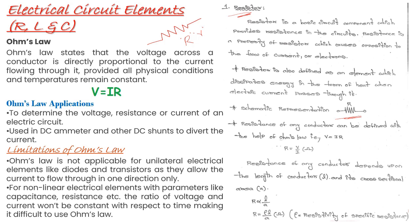The resistor is one such element which dissipates energy in the form of heat. Whenever we give electrical energy to this resistor — that means some current is flowing through it by means of some supply — the electrical energy applied across this resistor is converted into heat energy. So the resistor will dissipate the energy in the form of heat, and this will be done instantaneously.